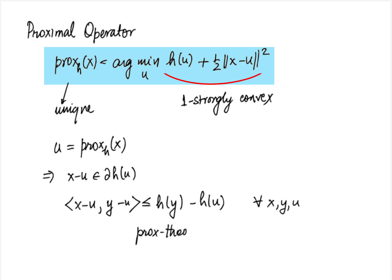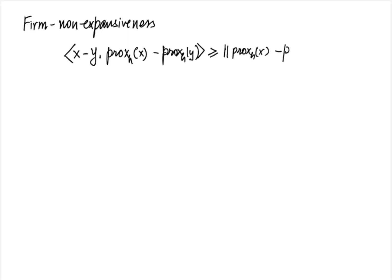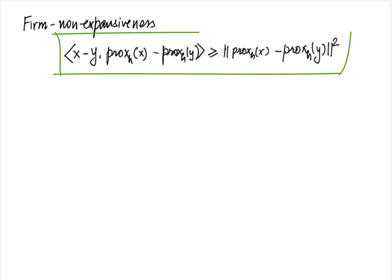This last property is called the prox theorem, analogous to the angle property in projection. Here the angle property is slightly modified: the left-hand side is the same, but the right-hand side is h(y) - h(u) instead of zero. If h were an indicator function, the right-hand side would again be zero. As with the projection operator, we also have the firm non-expansiveness property: <x - y, prox(x) - prox(y)> ≥ ||prox(x) - prox(y)||^2.